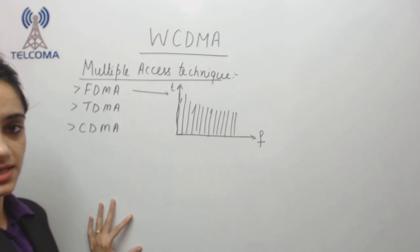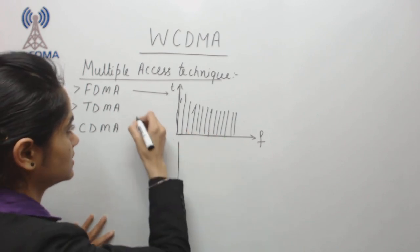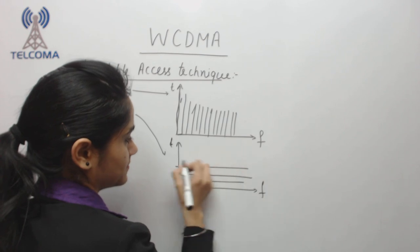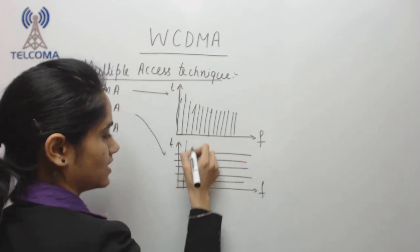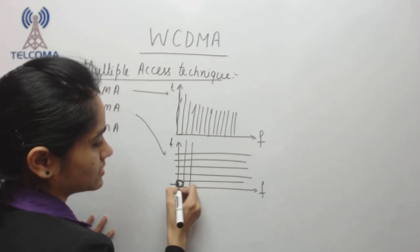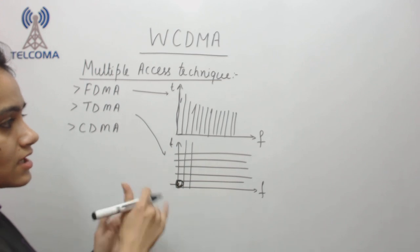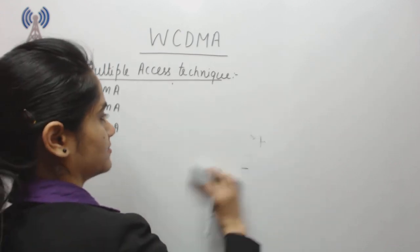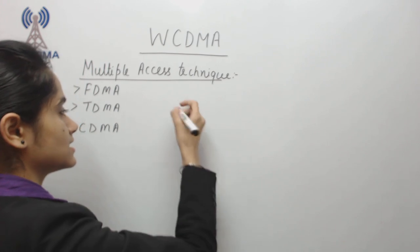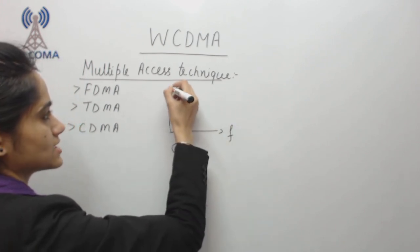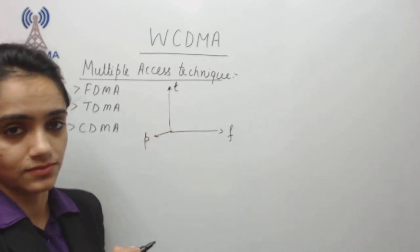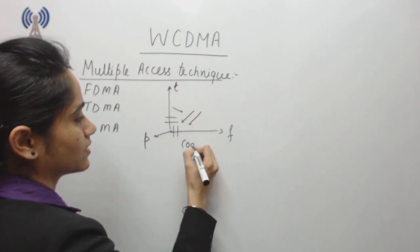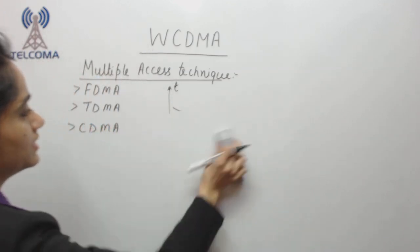In TDMA — Time Division Multiple Access — we divide time slots and can also divide frequency, so a particular frequency is used by a user at a particular time slot. This increases capacity by dividing users according to time slots. In CDMA — Code Division Multiple Access — each user can access the frequency at any time using their unique code, and the code of each user is different.